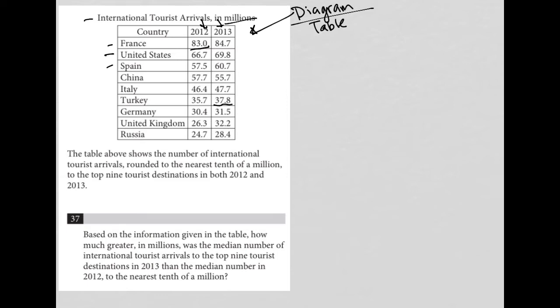So the information here says the table above shows the number of international tourist arrivals rounded to the nearest tenth of a million to the top nine tourist destinations in both 2012 and 2013. So the question about this information, question number 37, is saying, based on the information given in the table, how much greater in millions was the median number of international tourist arrivals to the top nine tourist destinations in 2013? In fact, I'm not going to even keep reading. Let's figure out what is the median. What is the median for 2013?